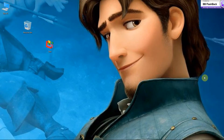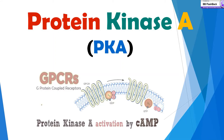Welcome back to Amir Hamcha — I hope you are all well and having a good time. Today I will talk about protein kinase A, or PKA in short form. Protein kinase A is activated by cAMP and involves GPCR — G-protein coupled receptor. This G-protein contains three subunits: alpha, beta, and gamma. When a ligand binds to the GPCR, it signals intracellularly and activates the alpha subunit for downstream signaling.